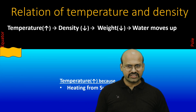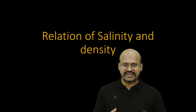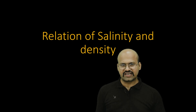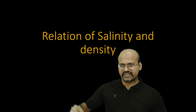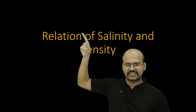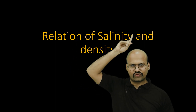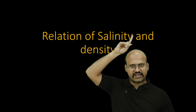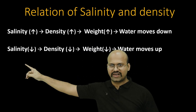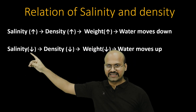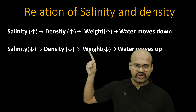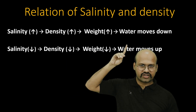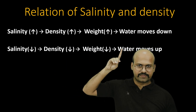Now let's see how salinity and density are related. If salinity increases, density increases, weight increases, and water moves down. If salinity decreases, density decreases, weight decreases, and water moves up.